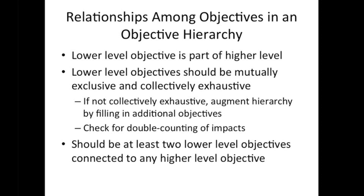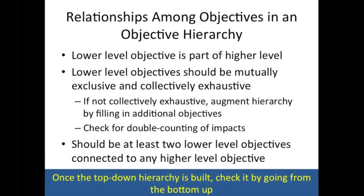When structuring your objectives into a hierarchy, there should be at least two lower-level objectives for every higher one. If you can't come up with more than one, you've likely reached the point at which you can stop the structuring process and begin to think about measurable attributes or evaluation criteria. A good check on your structure is to trace it from the bottom up to see if it makes sense.